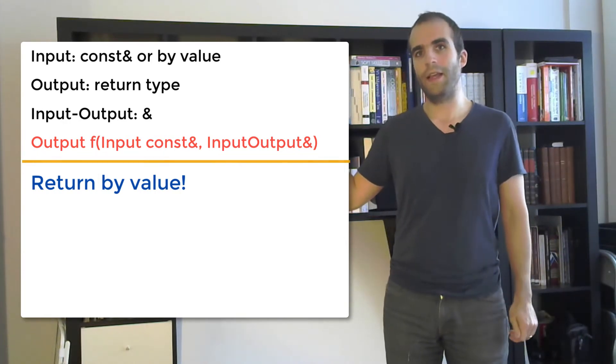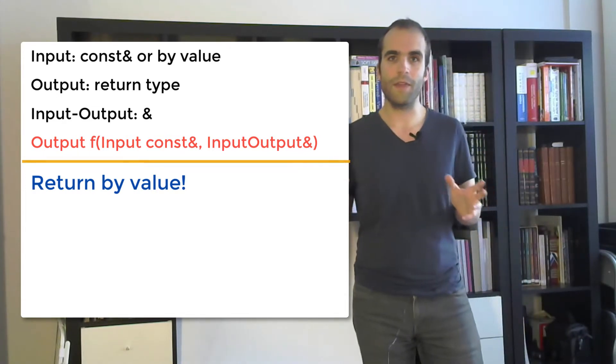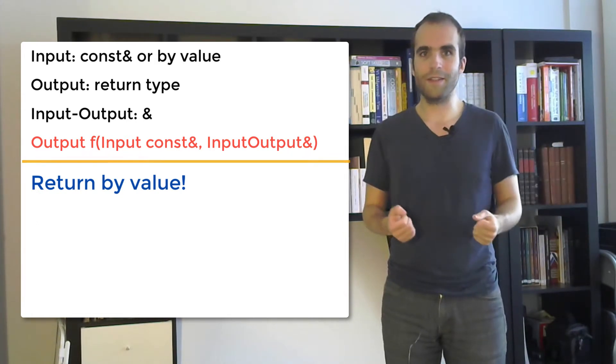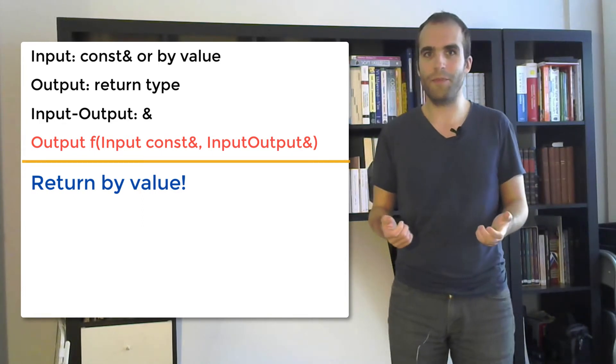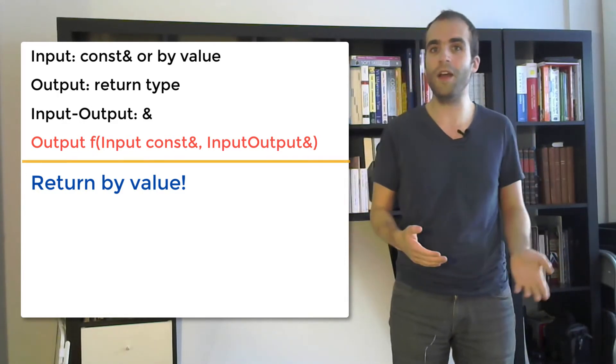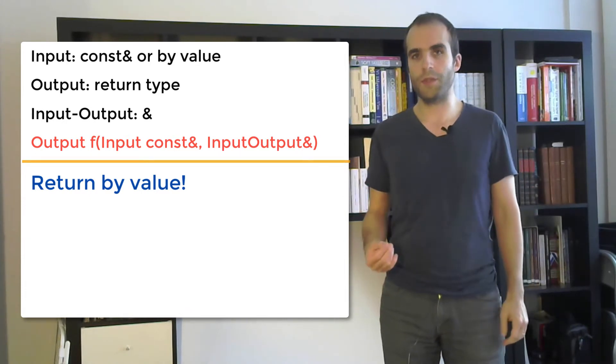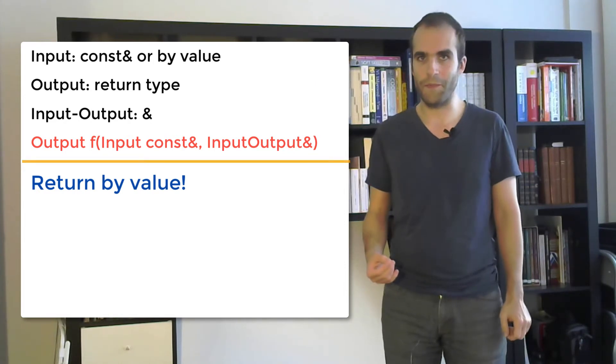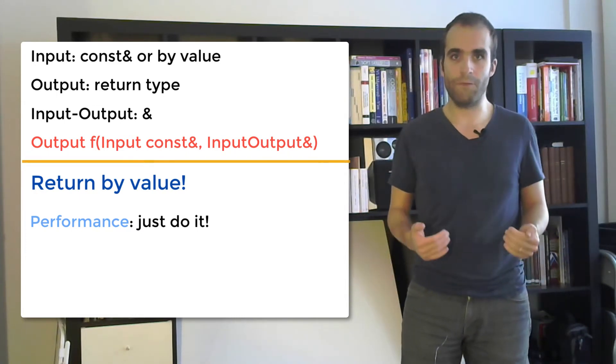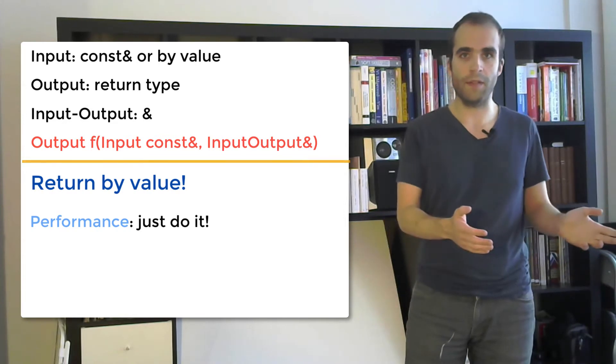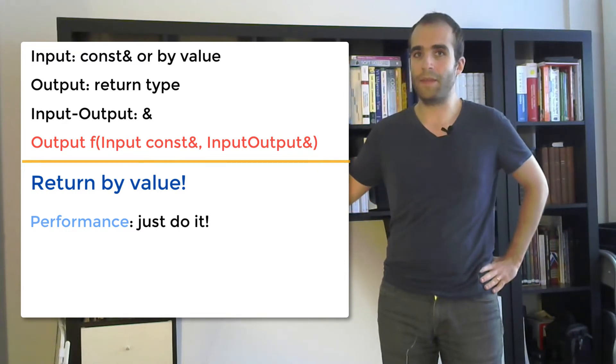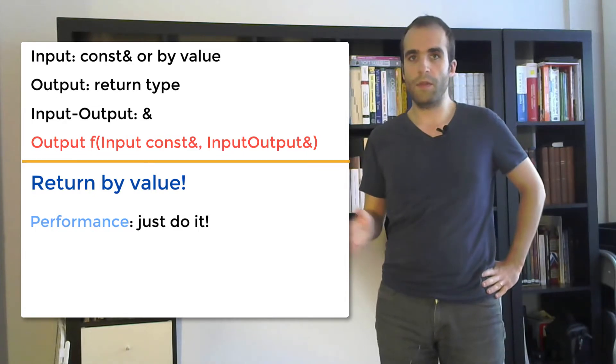The first reason is performance. When we see a function that returns a value, then there's something in our deep reptilian brain that starts being scared of performance, right? Because we're going to think that it's going to make a copy and copy takes time and we don't have the time, right? It's not efficient. But this is not true. I mean, most of the time it's not true. The language is going out of its way to let us write output through the return type without paying for performance impact. How does that work? Well, there are at least two mechanisms that prevent a performance cost through a return by value.